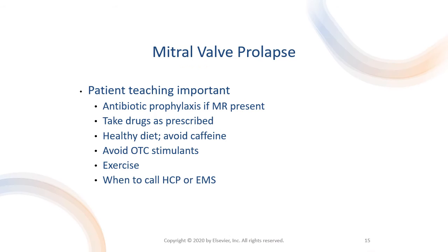Infective endocarditis may occur in patients with mitral regurgitation associated with mitral valve prolapse. Some patients may have chest pain, possibly resulting from abnormal tension on the papillary muscles. Chest pain episodes tend to occur in clusters, especially during periods of emotional stress. Dyspnea, palpitations, and syncope sometimes accompany the chest pain. Anti-anginal treatments like nitrates and beta blockers may control palpitations and chest pain. Encourage patients to stay hydrated, exercise regularly, and to avoid caffeine.